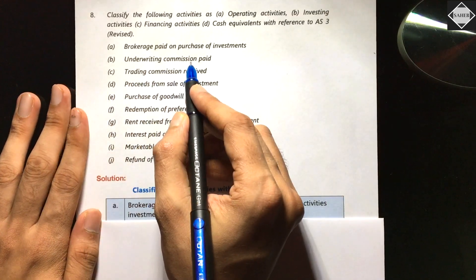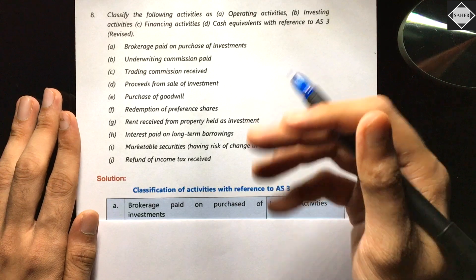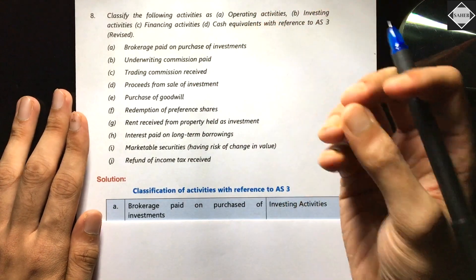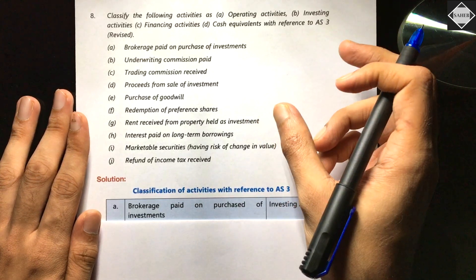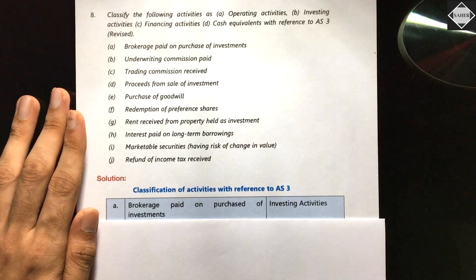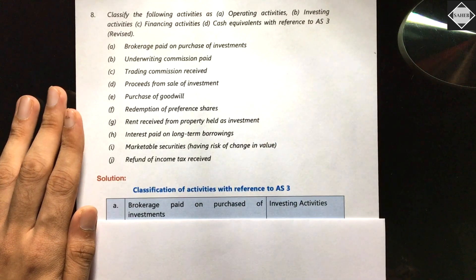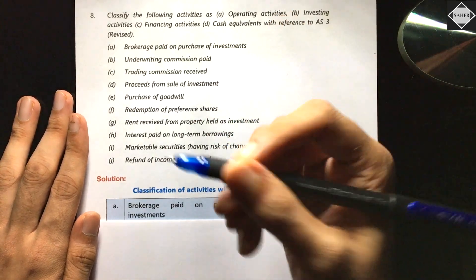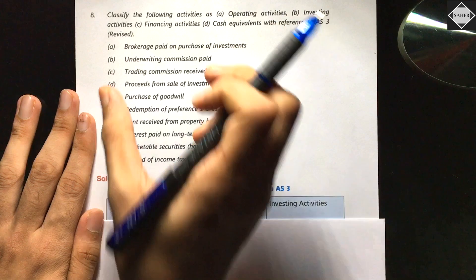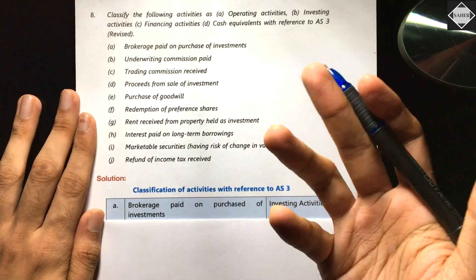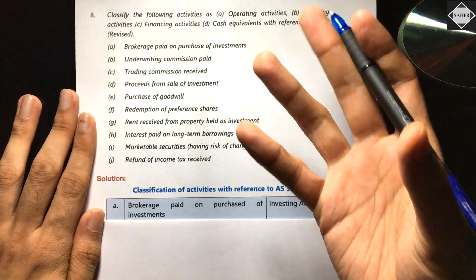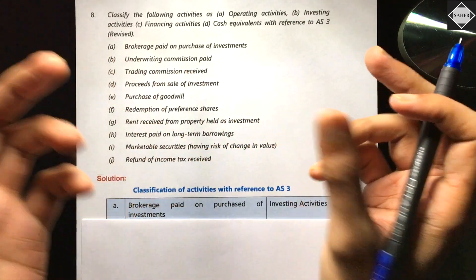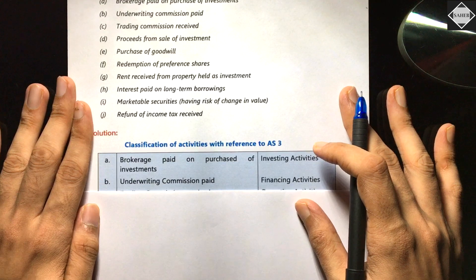Next: underwriting commission paid. When we issue shares, we go to underwriters who take responsibility for the public issue — if the public issue doesn't succeed, they take up the remaining shares. We pay them a commission for this service and risk. Since this happens because of issuing shares — which is a financing activity — the underwriting commission paid is also a financing activity.